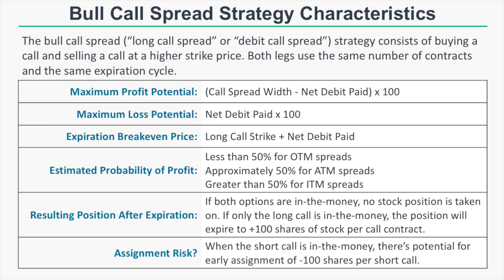The expiration break-even price of the bull call spread is the long call strike price plus the debit paid. The estimated probability of profit depends on the relationship between your call spread and the stock price. If you purchase a far out-of-the-money call spread, probability of profit will be less than 50%. An at-the-money call spread — buying one strike in the money, selling one strike out of the money — gives roughly 50% probability of profit. A deep in-the-money call spread gives greater than 50% probability of profit.